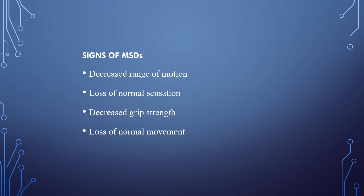Signs of musculoskeletal disorders — what are the signs we will see in musculoskeletal disorders? Decreased range of motion is one condition we can see as a sign. Loss of normal sensation is also a sign. Decreased grip strength and loss of normal movement are also signs of musculoskeletal disorders.